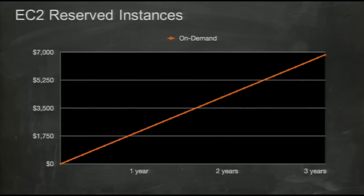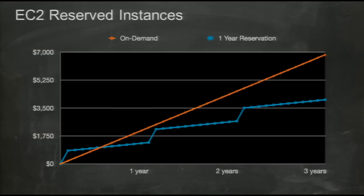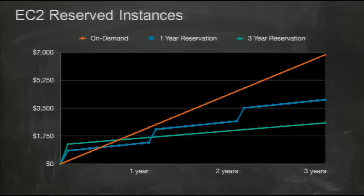EC2 reserved instances are a way of prepaying for instance hours. When you buy a reserved instance, you spend a bit of money up front in exchange for a big discount in the hourly fee. If you know you're going to need an instance for one to three years, reserved instances are a lot cheaper than paying by the hour. You can reserve for one year, which has a lower upfront cost but must be renewed annually, or for three years, which has a much greater upfront cost but a much greater net savings. One-year reservations save around 40% off the cost of paying by the hour, and three-year reservations save as much as 70%.